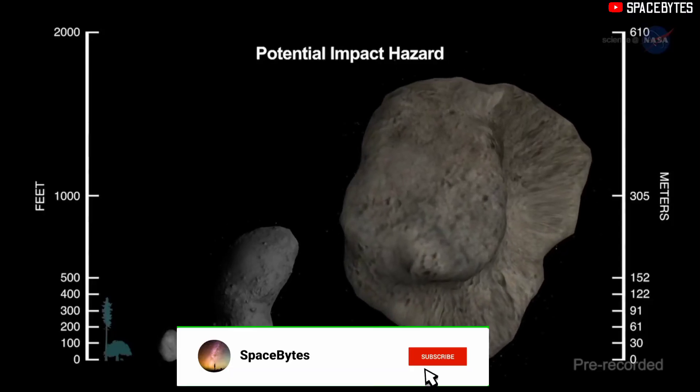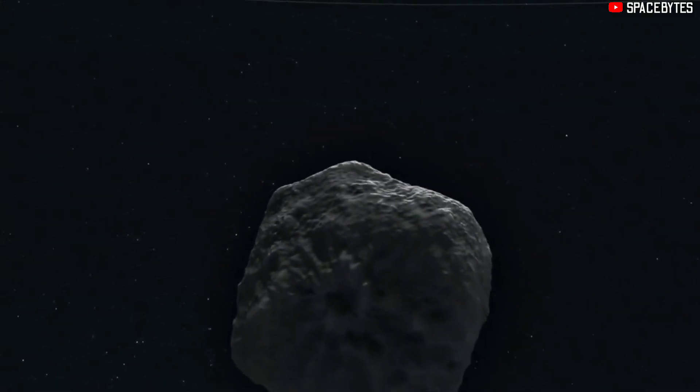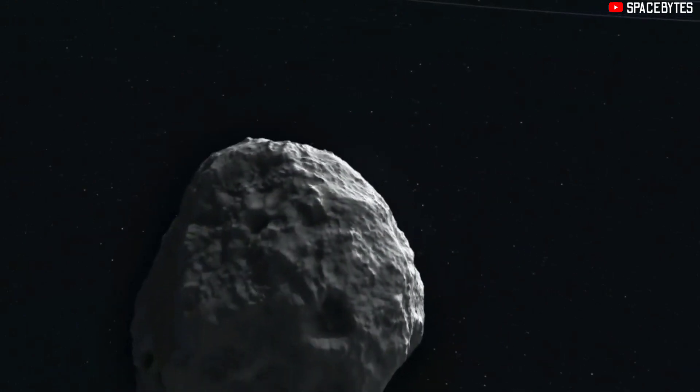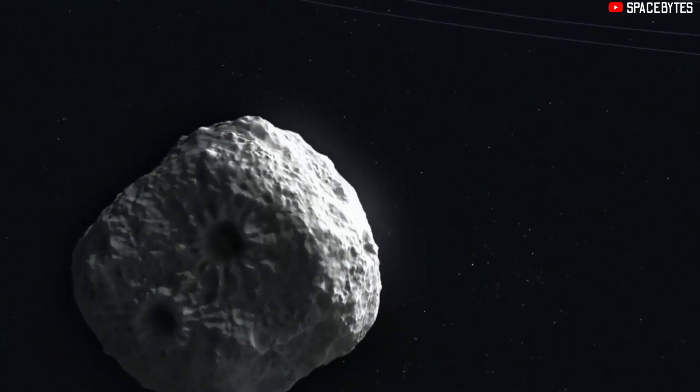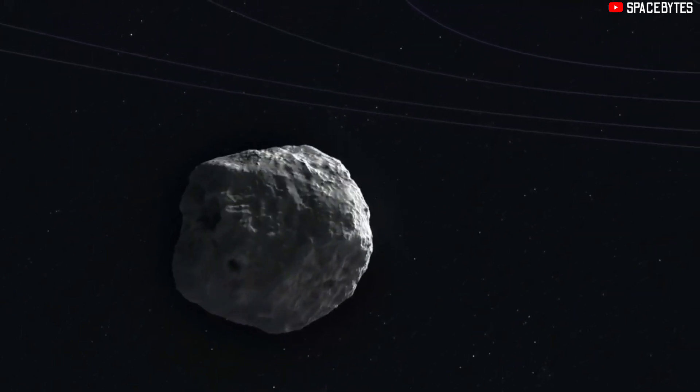2021 NY1 is categorized as an Apollo-class asteroid. Its orbit almost crosses the orbit of the Earth. Its orbit is 0.01 AU from the Earth's orbit when the paths are closest to each other.